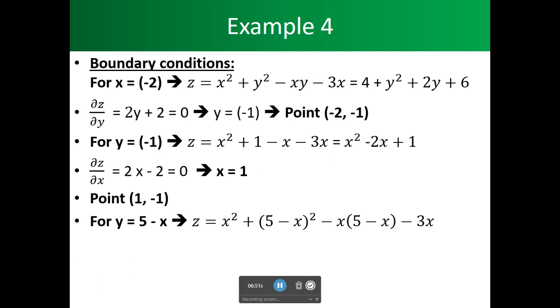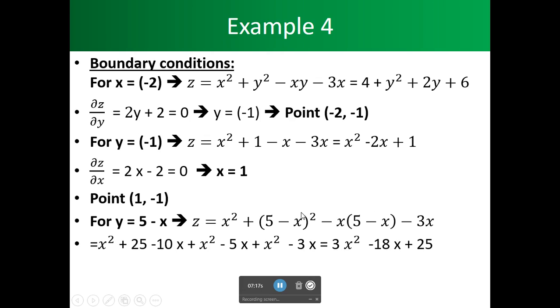Do it again. We deserve to find our boundaries. We have y is equal to 5 minus x. Take that and plug it back into our linear equation. And we'll come up with 3x squared minus 18x plus 5. Here we take the derivative of this with respect to x. We get 6x minus 18 equals 0. We solve for x. x equals 3.